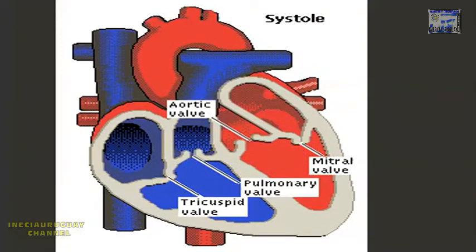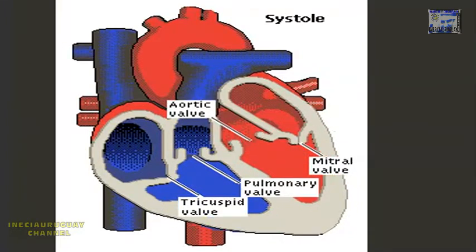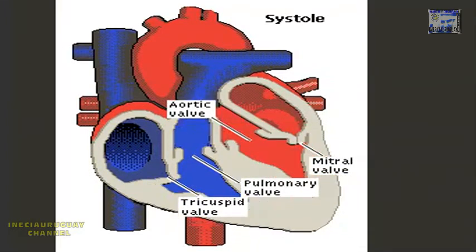During the systole stage, the filled ventricles contract. The mitral and tricuspid valves close. The aortic and pulmonary valves are forced open, and blood pushes out into the arteries.